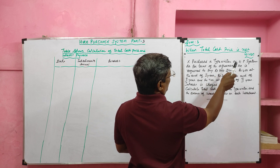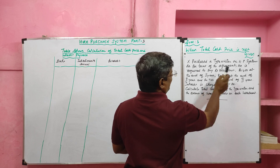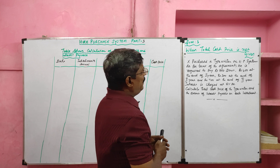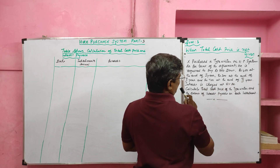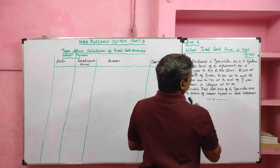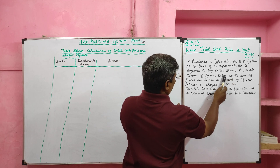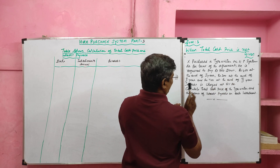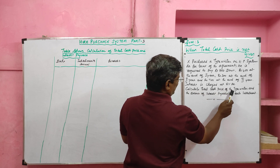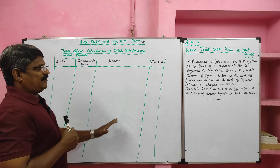X purchased a typewriter on hire purchase system. As per the terms of agreement, he is required to pay 800 rupees as down payment at the time of purchase. Then, 400 rupees at the end of the first year, 300 rupees at the end of the second year, and 700 rupees at the end of the third year. Interest is charged at 5% per annum. Calculate the total cash price of the typewriter and the amount of interest payable on each installment, in table format.